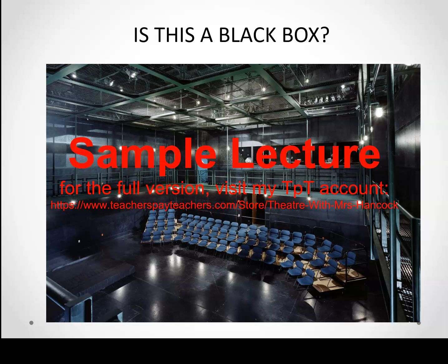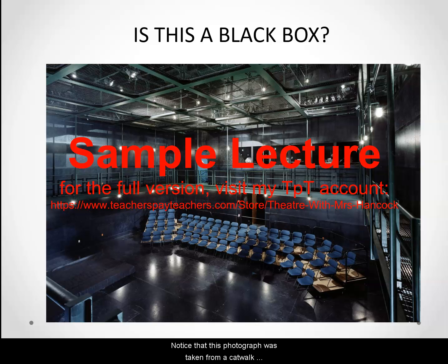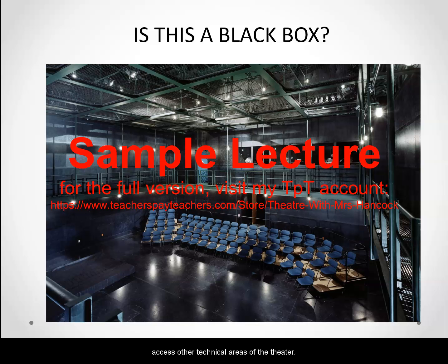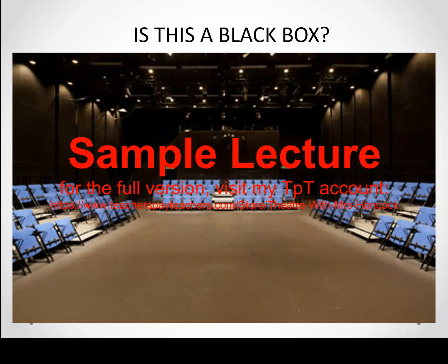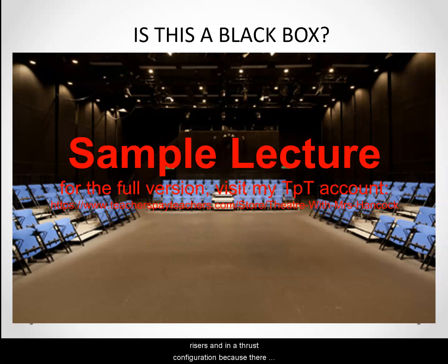Is this a black box? Open space, movable seating, and it happens to be darkly colored to help the lights not bounce around the entire space — so yes, it is a black box. Notice that this photograph was taken from a catwalk above the stage, which are usually there to help technicians reach lighting and sound equipment and access other technical areas of the theater. Here we have movable seating in a large dark space — this is also a black box. The chairs are on movable risers in a thrust configuration because you have seating on three sides.